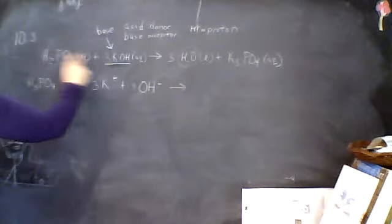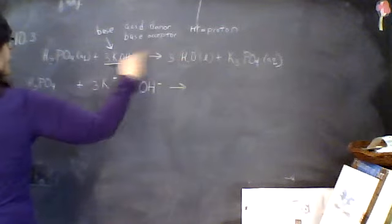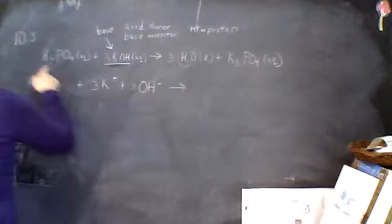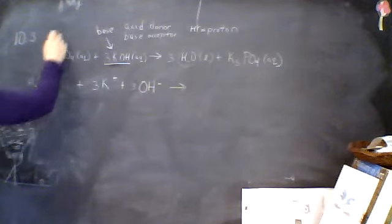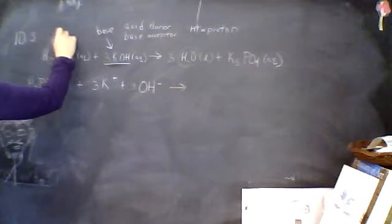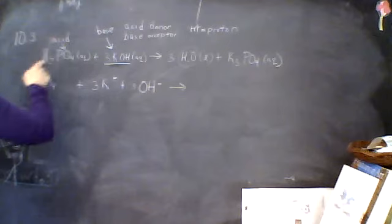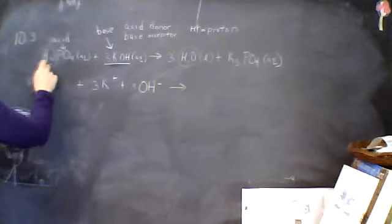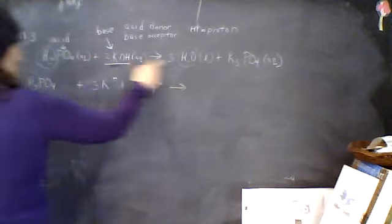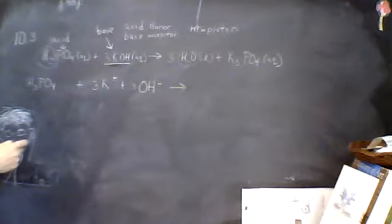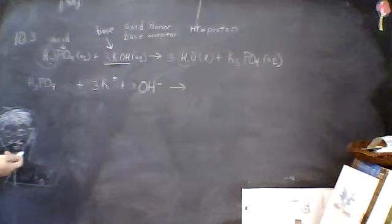The donor, all of the H's that join the OH, all three of them come from here, H3. So this is the acid. One donates its H3's and this one accepts those three hydrogen plus ions.